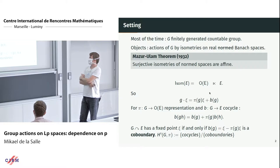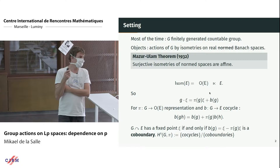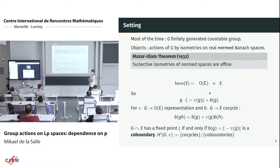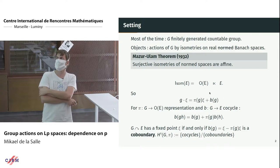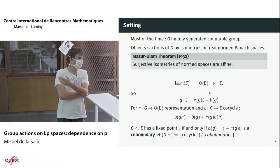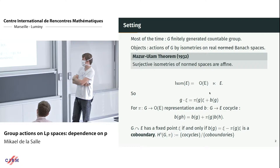There is a basic old theorem by Mazur-Ulam which says that surjective isometries of a normed space are necessarily affine. In a Hilbert space this is an easy exercise; for strictly convex spaces it's also straightforward; for general spaces it's a theorem of Mazur-Ulam. One way to express this: the isometric group of a Banach space E decomposes as a semi-direct product of the orthogonal group — linear isometries fixing the origin — and the translation part.